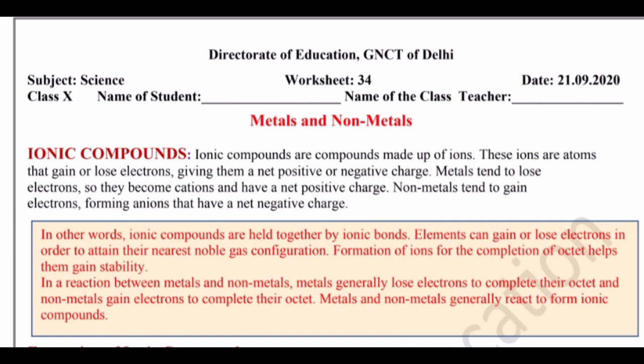Ionic compounds are compounds made up of ions. These ions are atoms that gain or lose electrons, giving them a net positive or negative charge. Metals tend to lose electrons, so they become cations and have a net positive charge. Non-metals tend to gain electrons, forming anions that have a net negative charge.